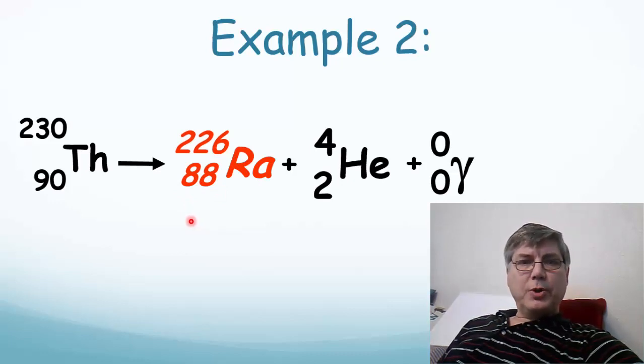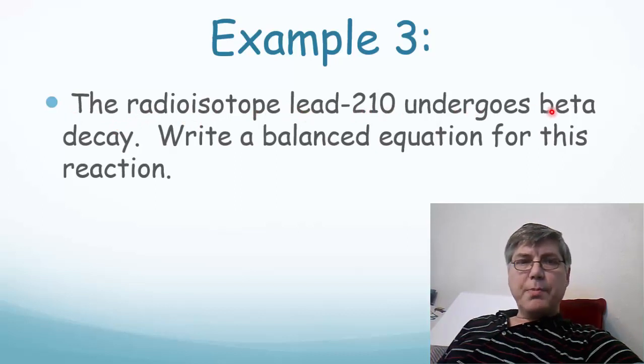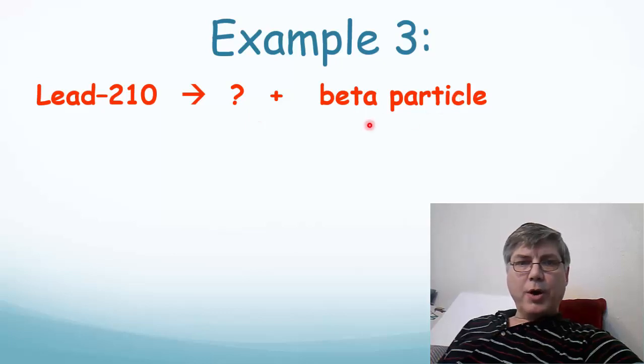Let's look at a third example. In this case, we've got a word problem. It says the radioisotope lead-210 undergoes beta decay. Write a balanced equation for this reaction. So the key here is that we know we have lead-210 and we have a beta particle coming out. So we can write that out here so we don't forget it. Lead-210 becomes something with a beta particle.